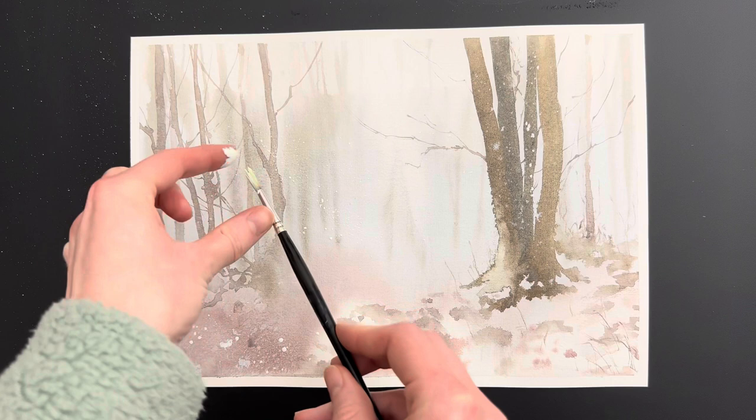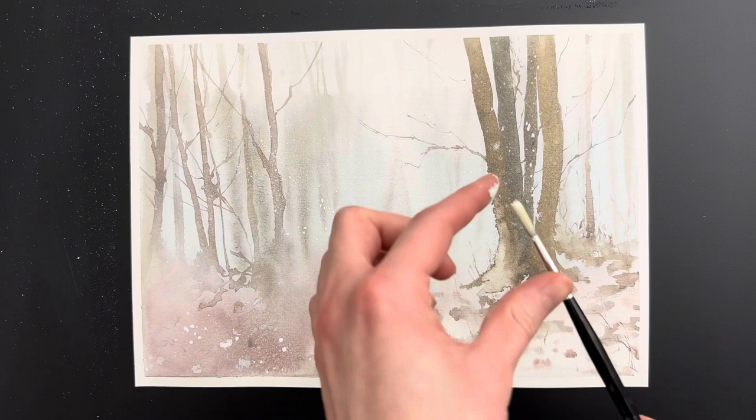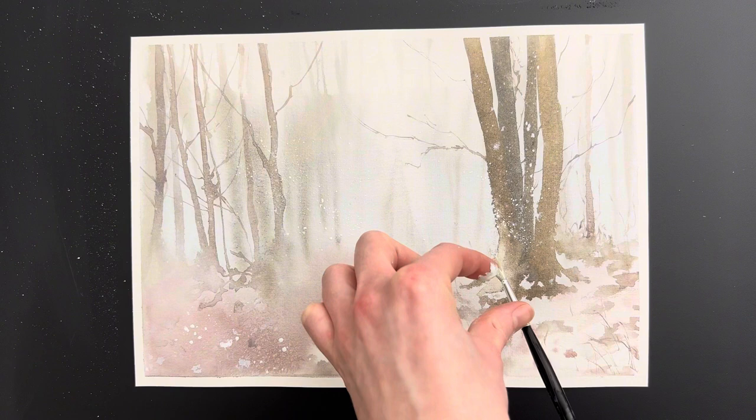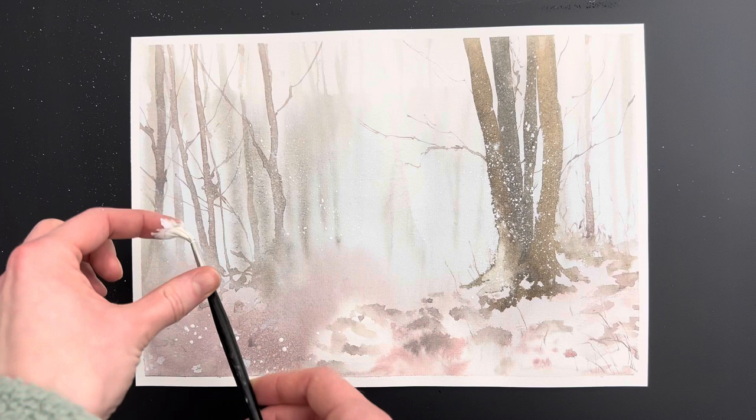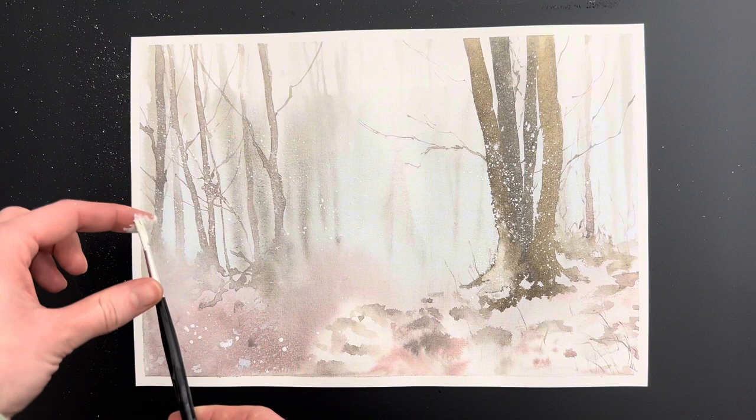Here I decided to add in some white paint specs to mimic snow. This made it even more wintery. Here I just pick up some white paint, get quite a lot on there and just flick your finger back over the brush and it spatters back at the painting and it looks just like snow. It's really pretty effect.